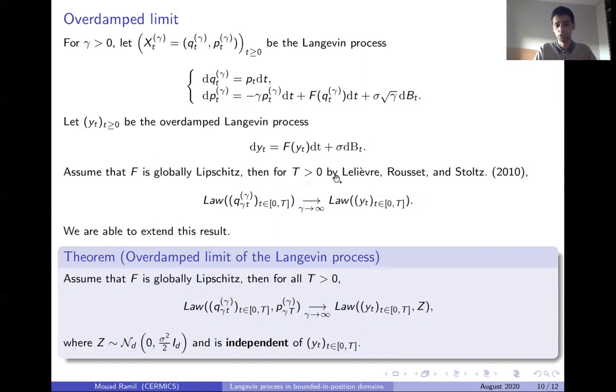We have the following result: if f is globally Lipschitz, then it is shown in the Langevin process that the law of the Langevin, the position of the Langevin process evaluated at gamma t on this bounded interval, converges weakly to the law of the overdamped Langevin process when gamma goes to infinity.